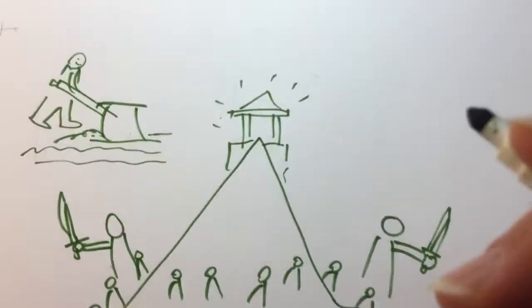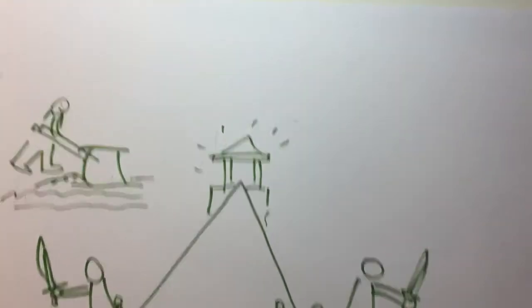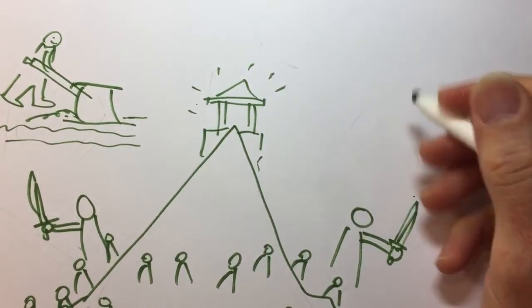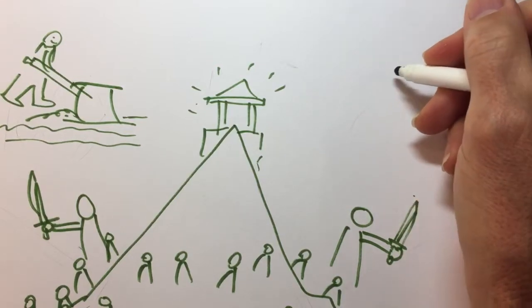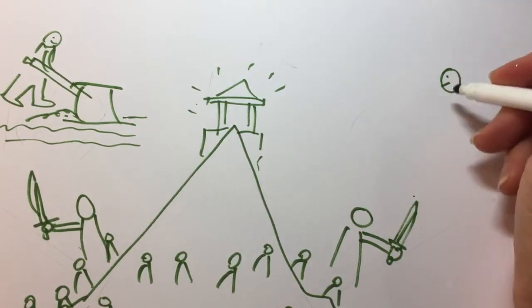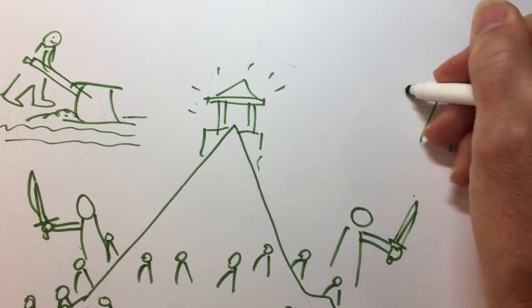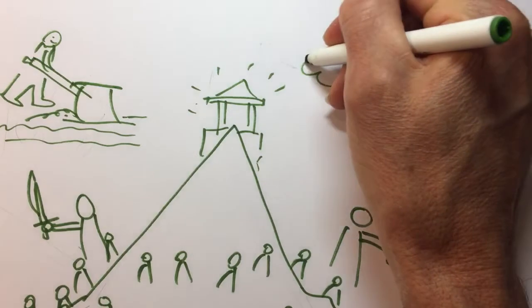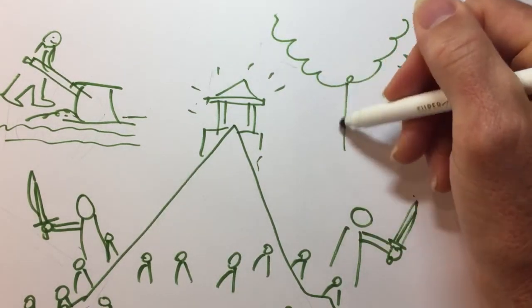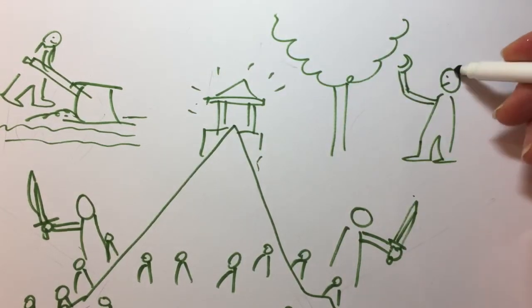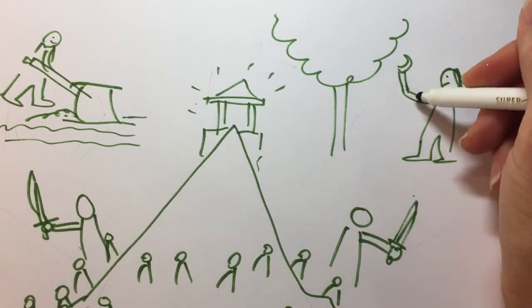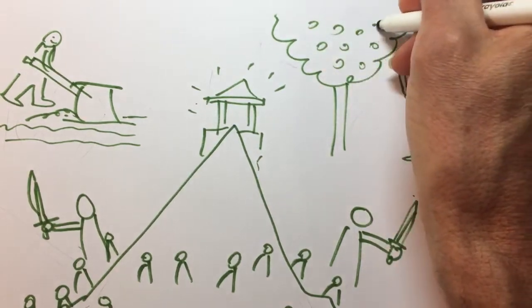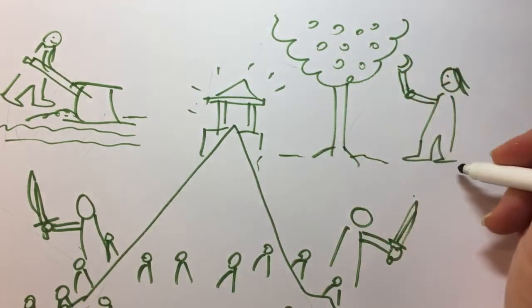And then over here, this sword, we're going to melt this down and make it into a pruning hook. And here's a person who has a pruning hook. And they're using their pruning hook to prune a fruit tree. She's pruning a fruit tree. There's her pruning hook. And it's pruning off the fruit that isn't good so you can get better fruit.